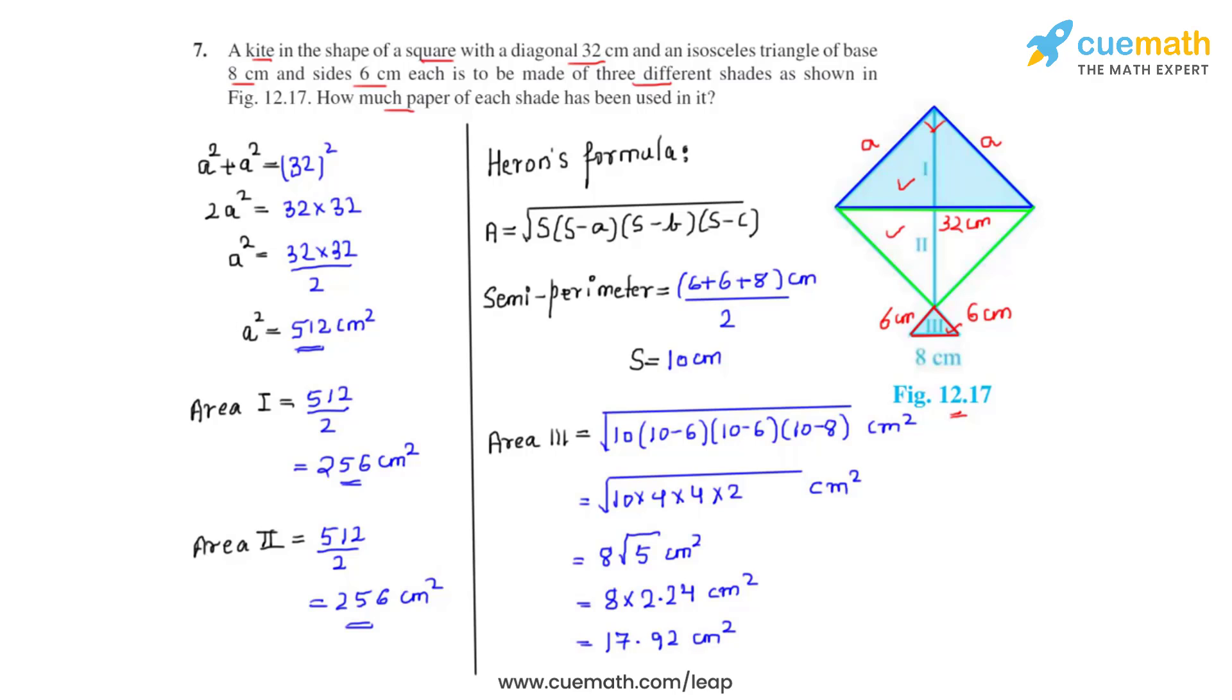So the answer for this question will be: the area of region 1 is 256 centimeter squared, area of region 2 is also 256 centimeter square, and the area of region 3 is 17.92 centimeter square.